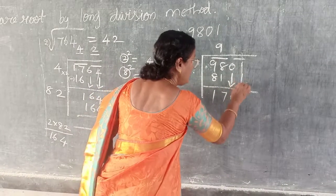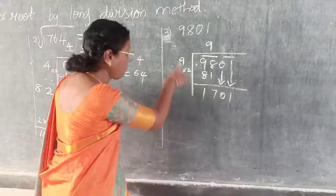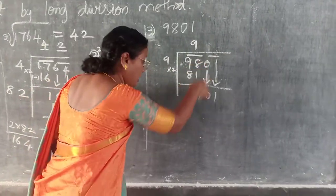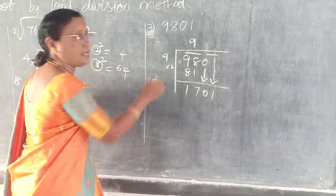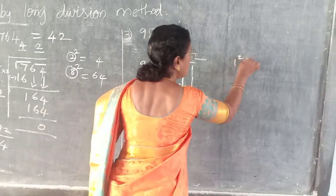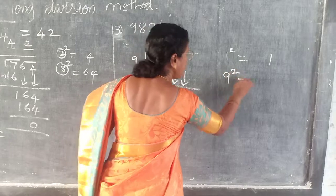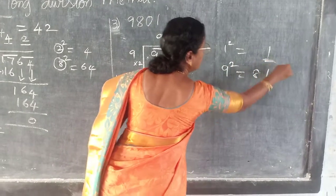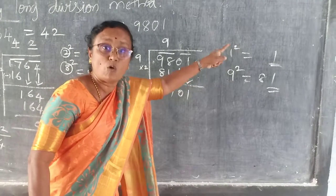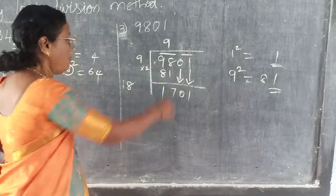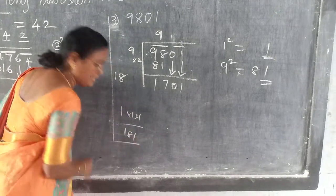You have to bring down these 2 digits — multiply by 2. Don't forget to multiply: while you are bringing down 2 digits it should be multiplied by 2. 9 times 2 is 18. Now 1 square is 1 — ending with 1. 9 square is 81 — also ending with 1. So either you have to take 1 or 9. Try 1 into 181 — you will have 181. Is it there? No.